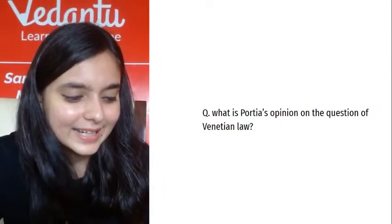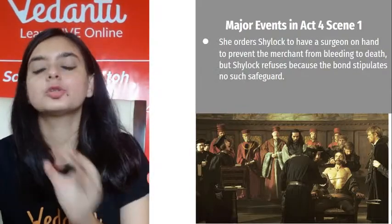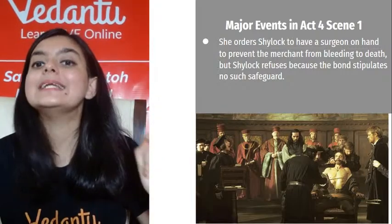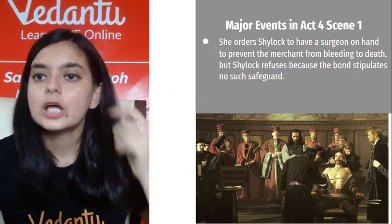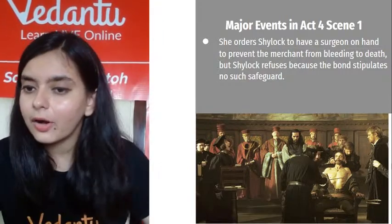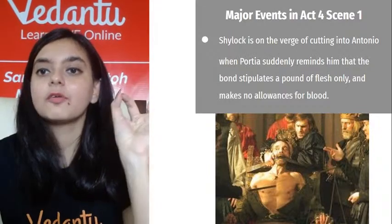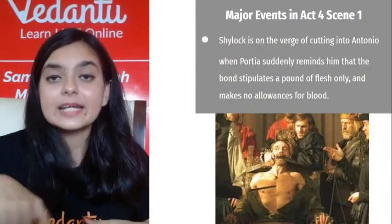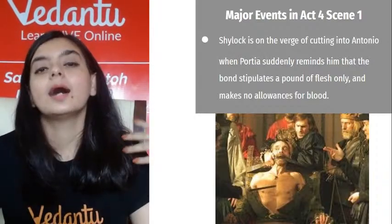Shylock says nothing is written in the bond about having a surgeon — there is no such safeguard. Shylock is on the verge of cutting into Antonio — this is when the play reaches its climax. If you remember the Freytag Pyramid, the climax occupies the peak where maximum tension and anxiety are mounted. After this point there will be a fall.